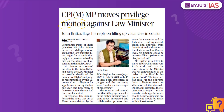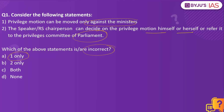So what is this privilege motion? Basically, there are some rights given to the parliamentarians. If those rights are being violated, a notice can be given by any member of the parliament against that person. So it is not only against the minister, but it can be against any member of the parliament. Any member who is part of the parliament can raise a privilege motion against any other member. So the first option is wrong, which is why the answer is one only.